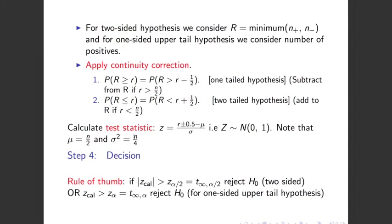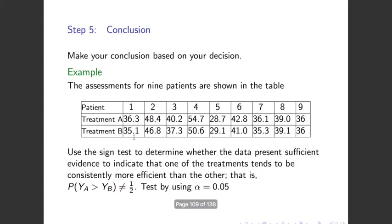Nine patients each undergo two treatments — treatment A and treatment B — paired under each patient. Use the sign test to determine whether the data presents sufficient evidence that one treatment tends to be consistently more efficient than the other. We say P(Y_A > Y_B) should not equal one half. This is a two-sided test using alpha equals 0.05.